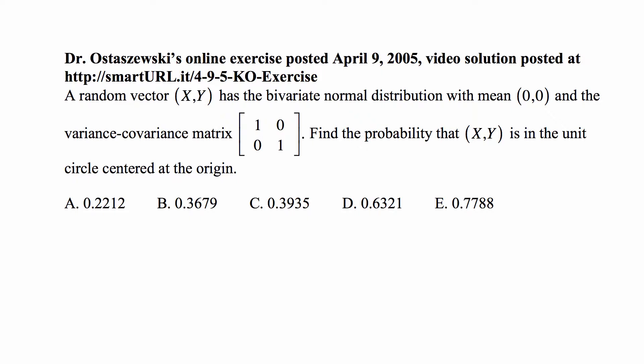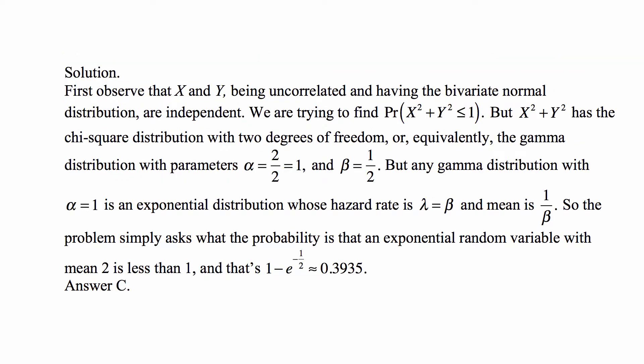Note that this variance-covariance matrix tells you that the variance of X is 1, variance of Y is 1 — the two entries on the diagonal — and then the covariance of X and Y is 0, and covariance of Y and X is 0 as well because they're equal. So these are two random variables that have bivariate normal distribution and are uncorrelated. And in this specific case of bivariate normal distribution, two uncorrelated random variables are independent because they're bivariate normal. So we actually know that they're independent — X and Y being uncorrelated and having the bivariate normal distribution are independent.